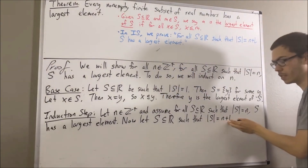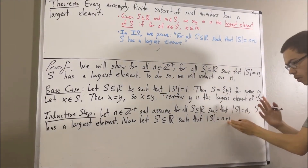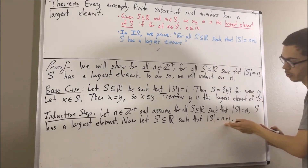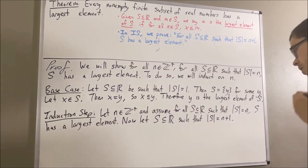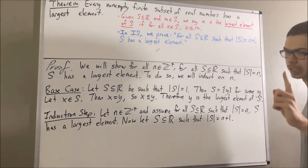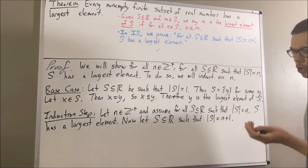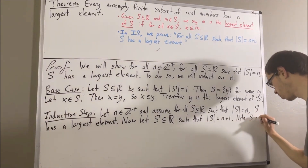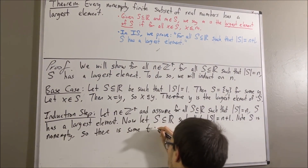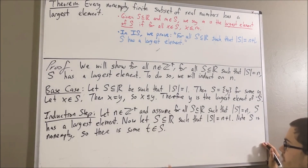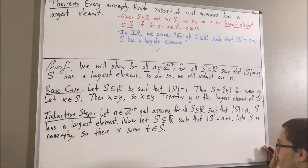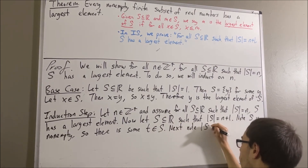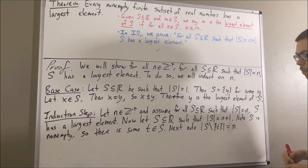Since n plus one is clearly not equal to zero, this means that the number of elements in s is not equal to zero, so s is non-empty. Since s is non-empty, there is at least one element in s — I'll call it t. Next, since s has n plus one elements, if we remove the element t from s, then the resultant set will have n elements. Now, intuitively this is pretty clear, but really we're getting this fact from the following property about finite sets.